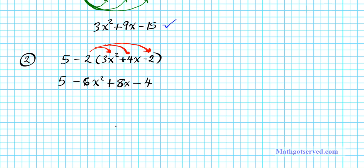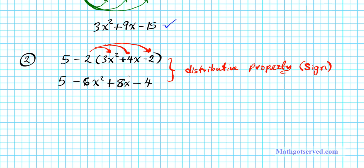The error is the distributive property again, but what's unique about this one is the sign. Just as you have to distribute the number, the sign that the number carries must be distributed also. In this step I distributed just the 2 but failed to carry along the sign of the 2. So only the first term had an inversion of sign while the other signs remained the same, which is inaccurate.